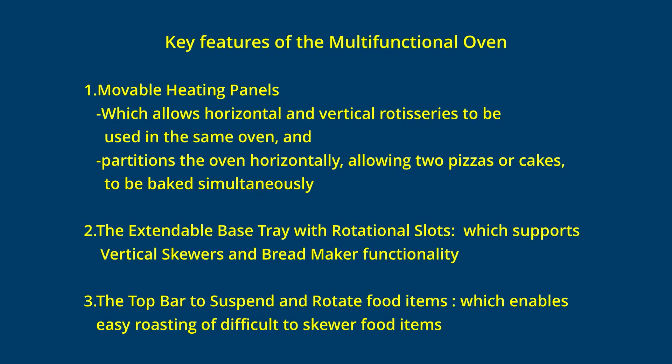Let's review the key features of the multifunctional oven. Namely, the movable heating panels, which allow horizontal and vertical rotisseries to be used in the same oven and partition the oven horizontally, allowing two pizzas or cakes to be baked simultaneously. The extendable base tray with rotational slots supports vertical skewers and bread maker functionality. And the top bar to suspend and rotate food items enables easy roasting of difficult-to-skewer food items.